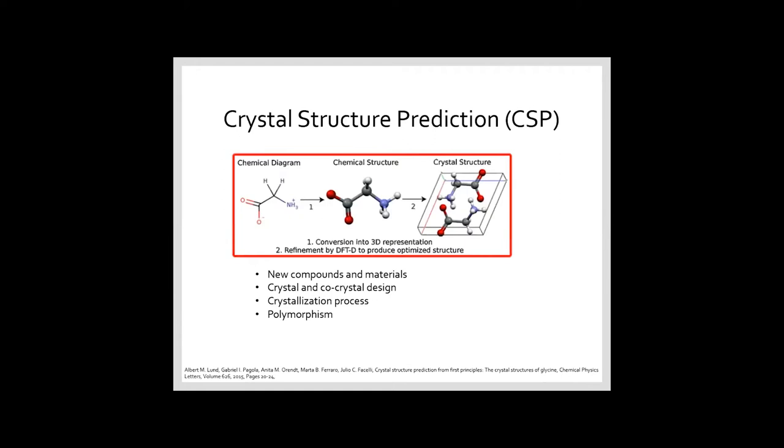What is crystal structure prediction? If we have any molecule, we want to be able to predict the crystal structure of that molecule based only on the knowledge of the chemical composition or the chemical diagram, even in cases where polymorphism is present. This means when the crystal structure exists in more than two crystalline structures. This is very important for industrial science and academics because it simplifies the development of new compounds and materials, the design of crystalline crystals, and the understanding of the crystallization process and polymorphism.